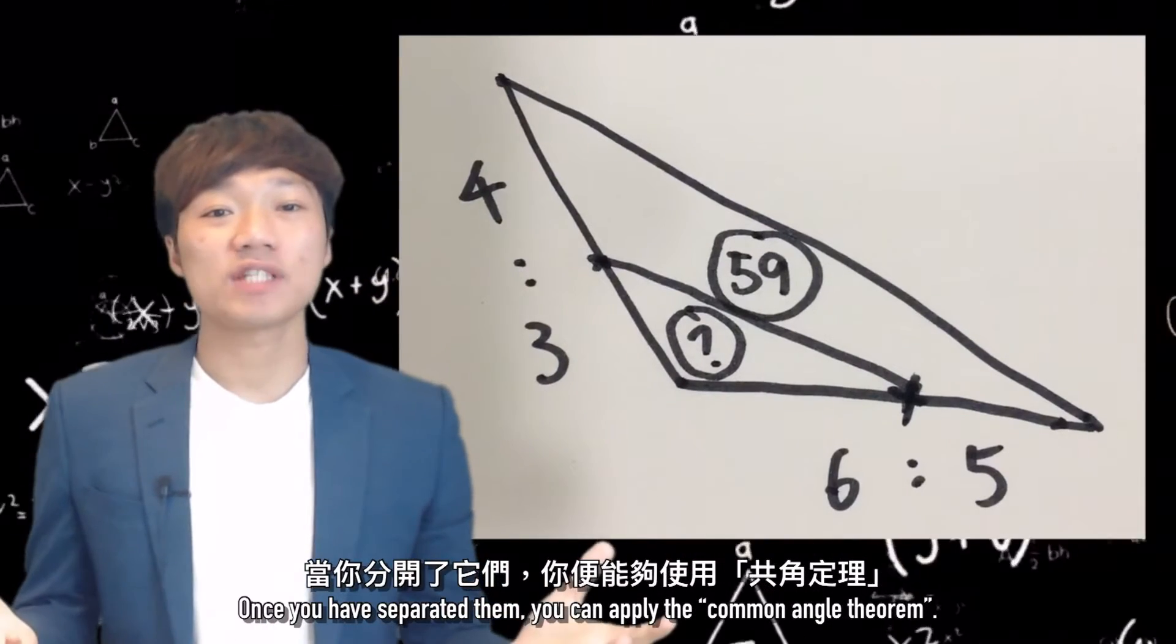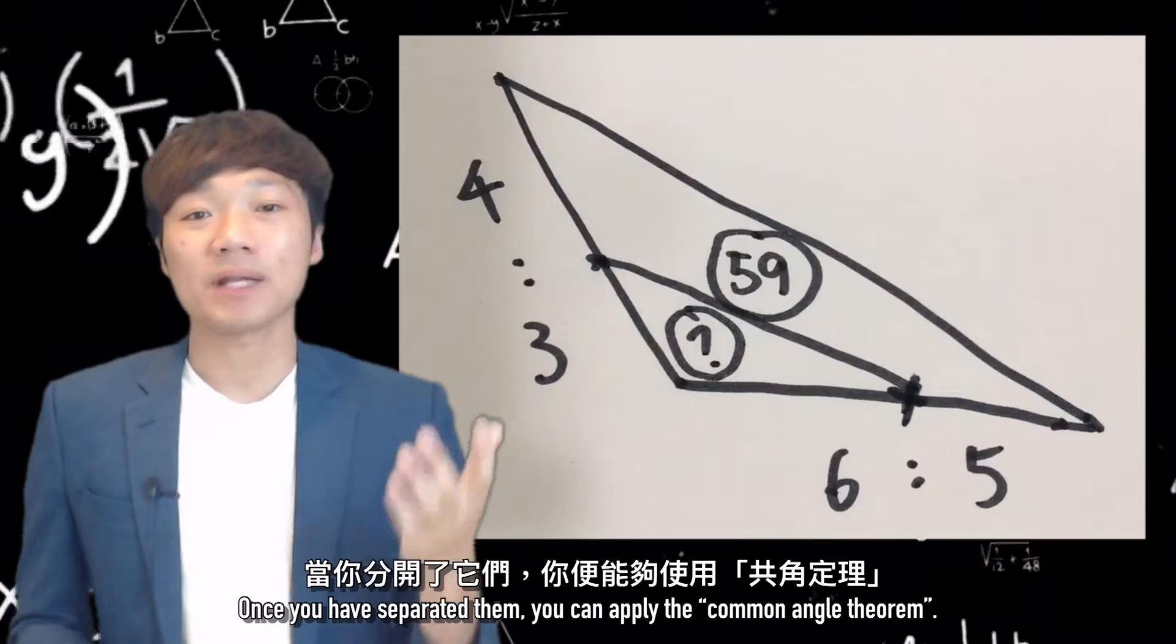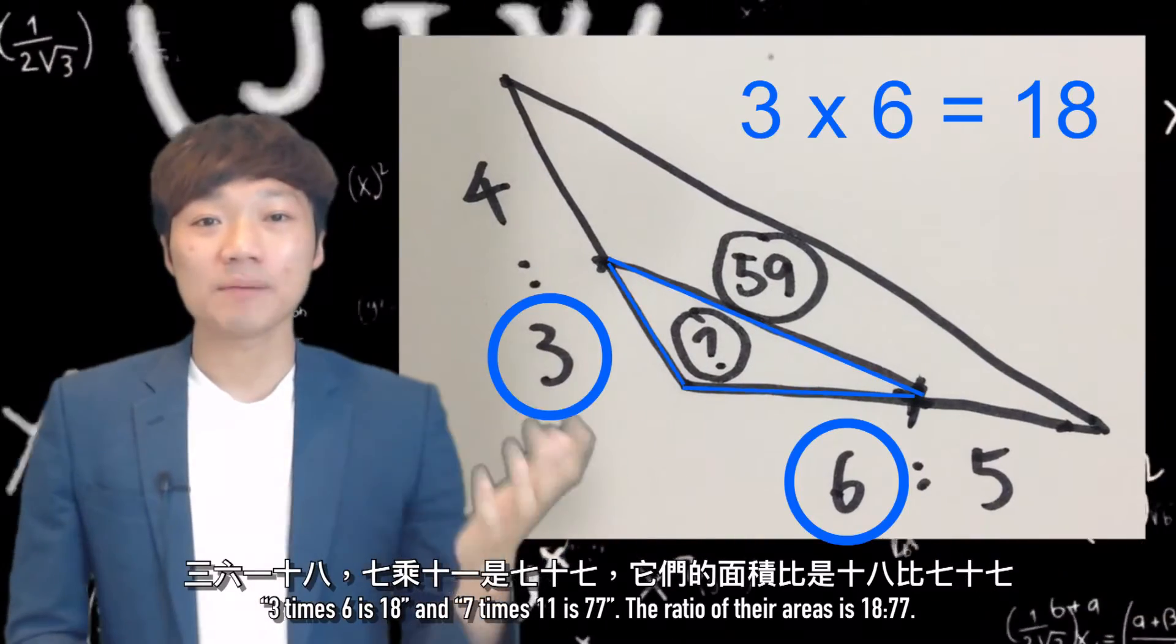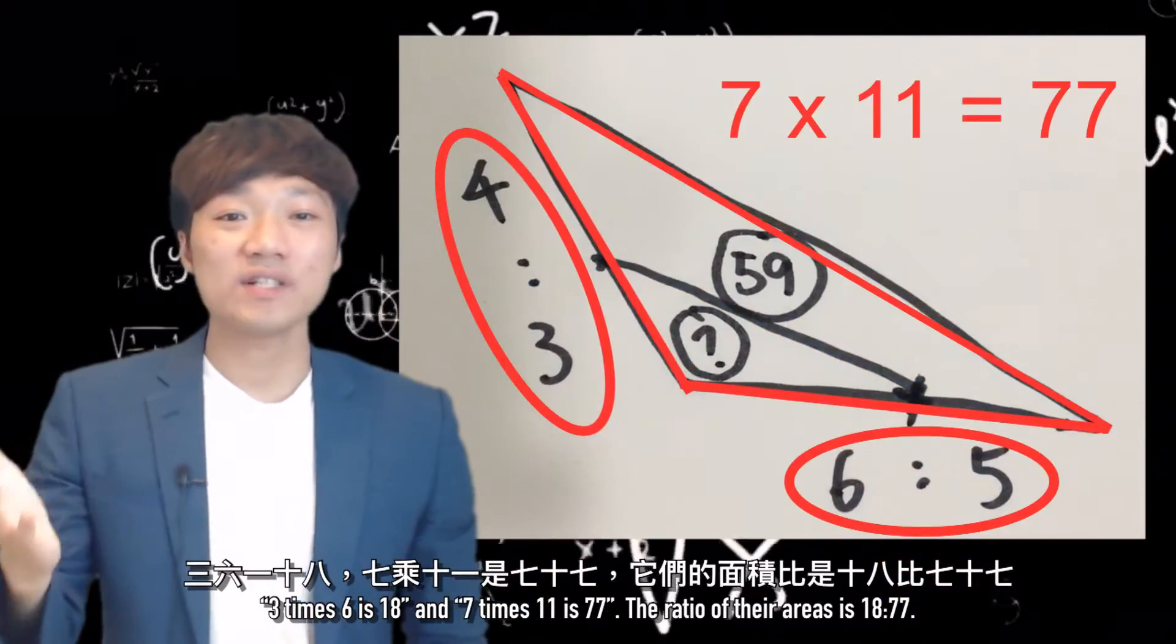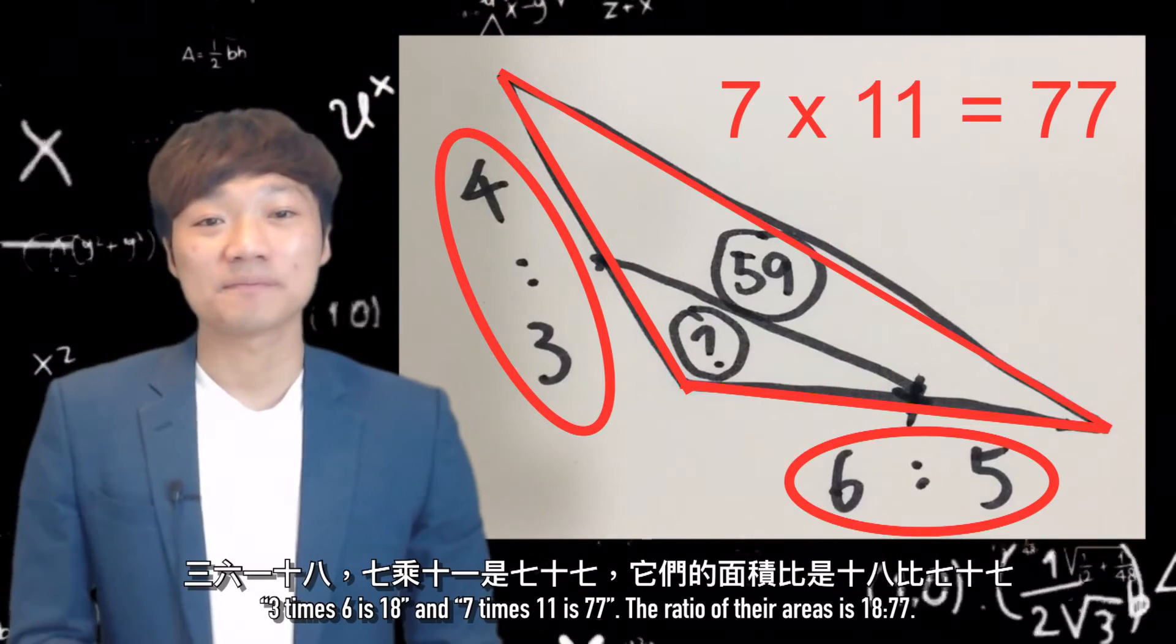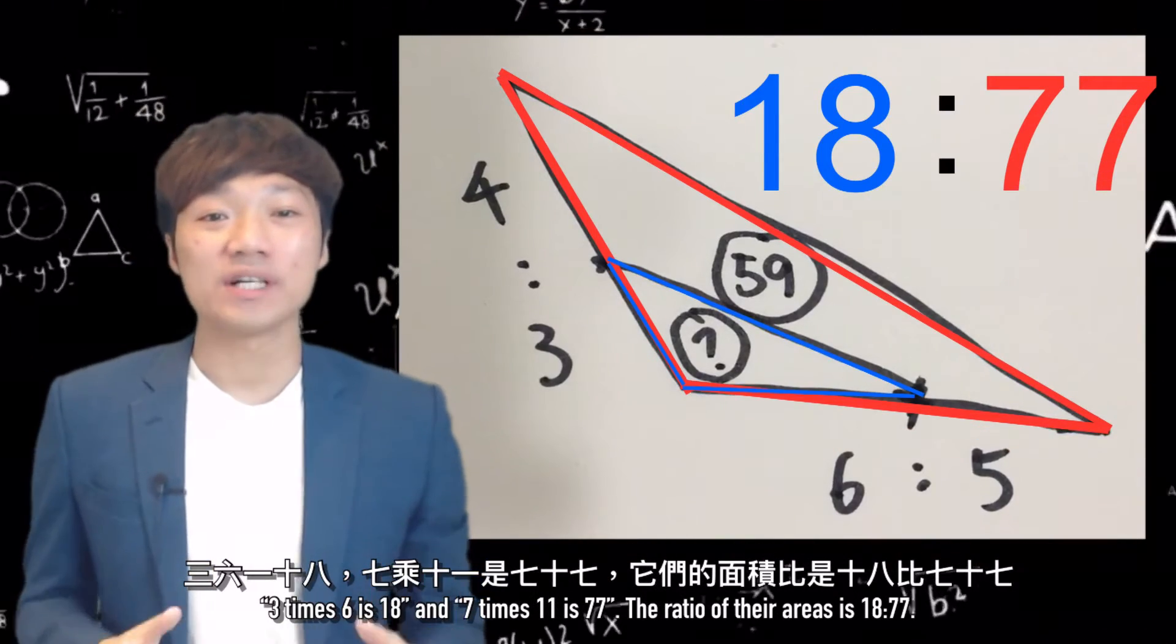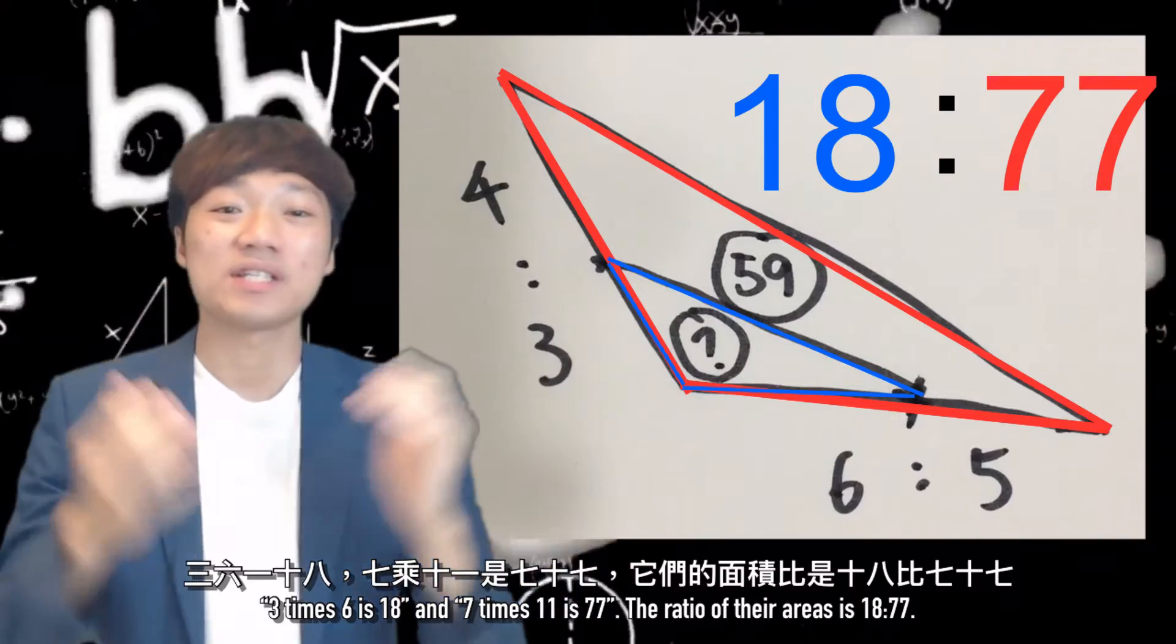Once you have separated them, you can apply the common angle theorem. 3 times 6 is 18 and 7 times 11 is 77. The ratio of their areas is 18 to 77.